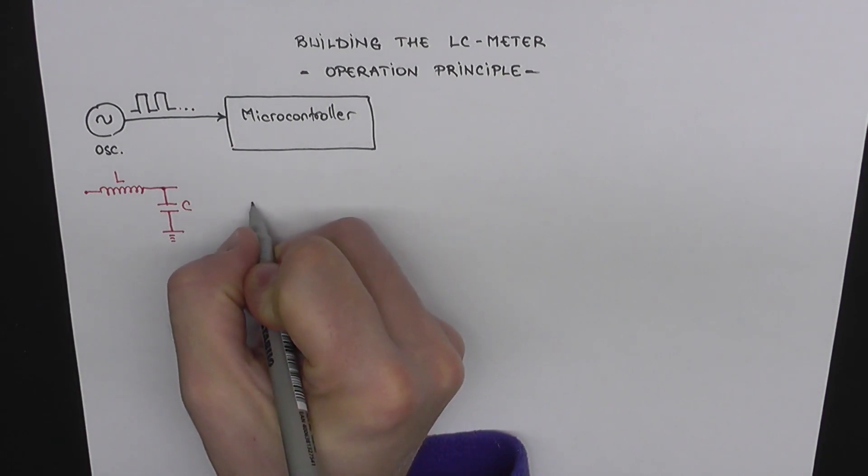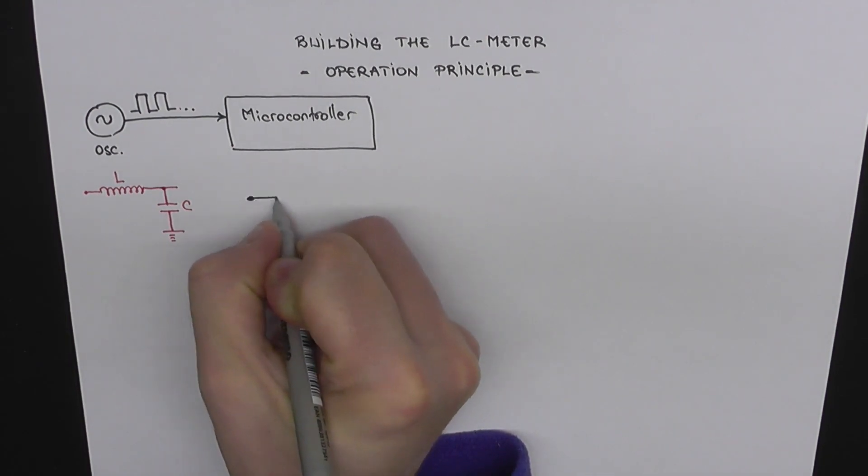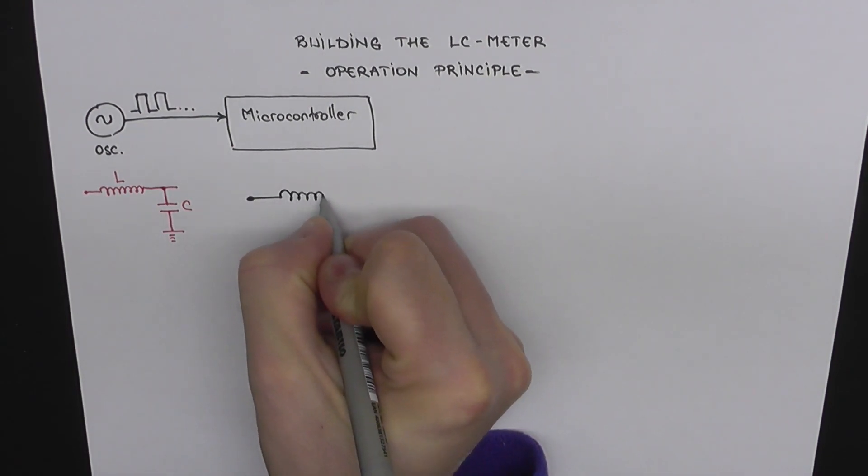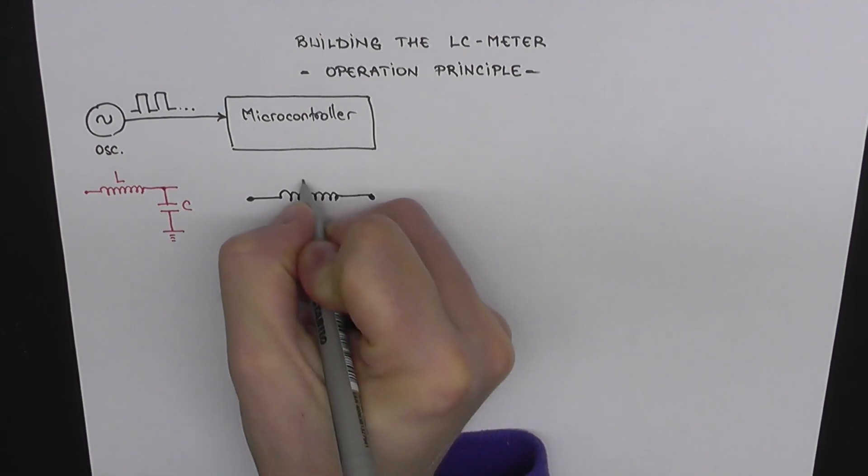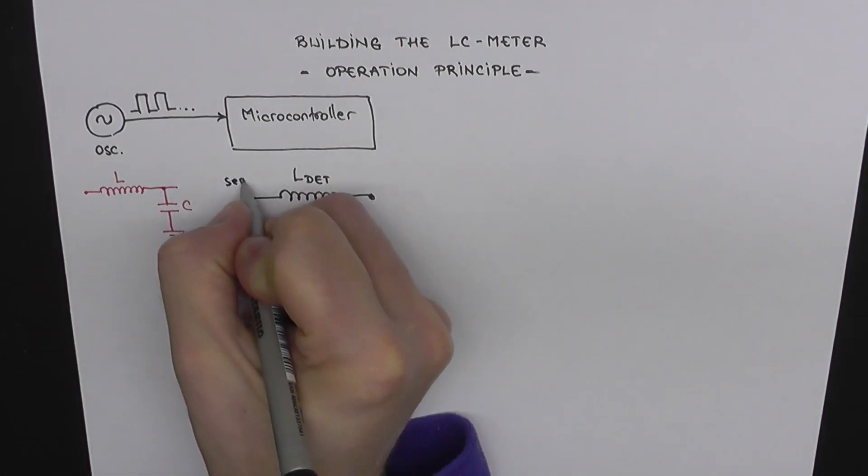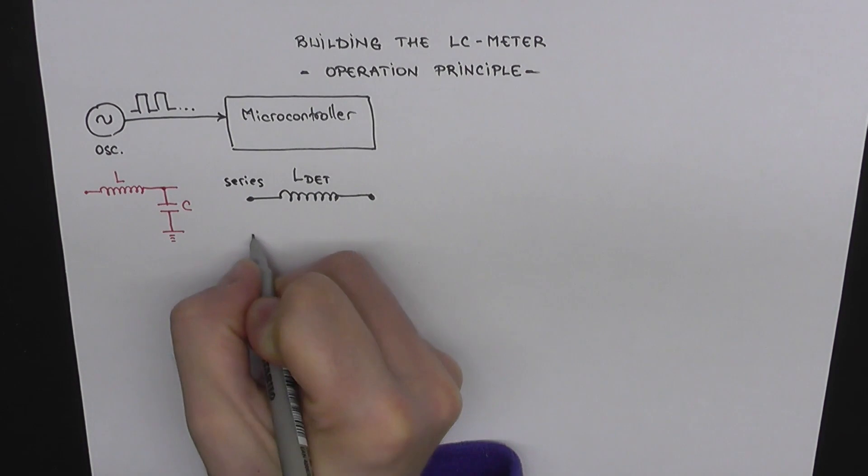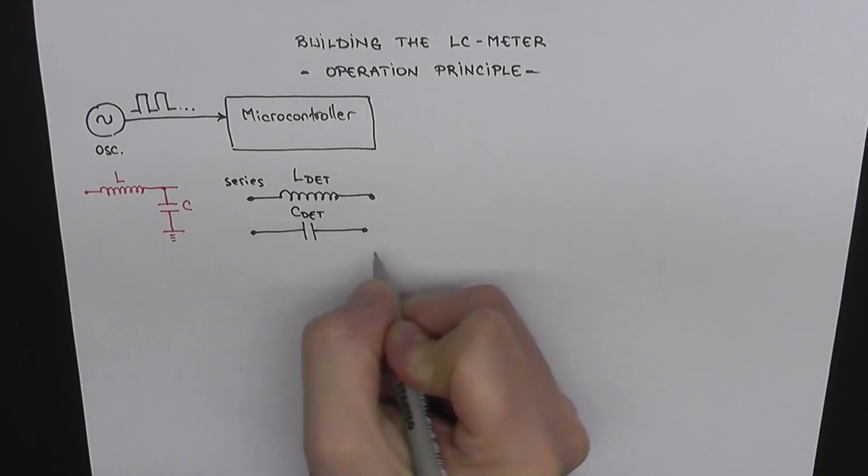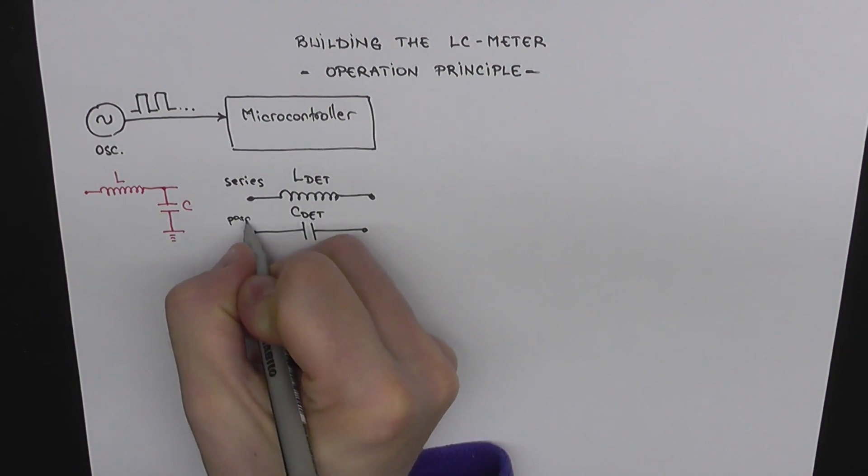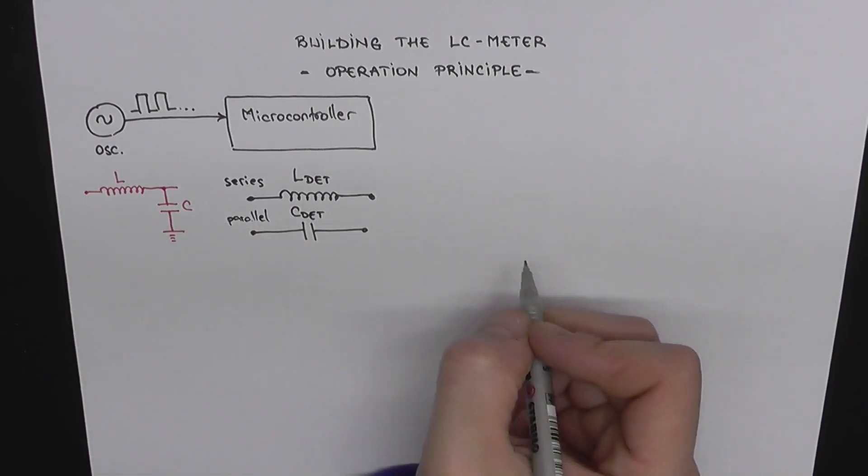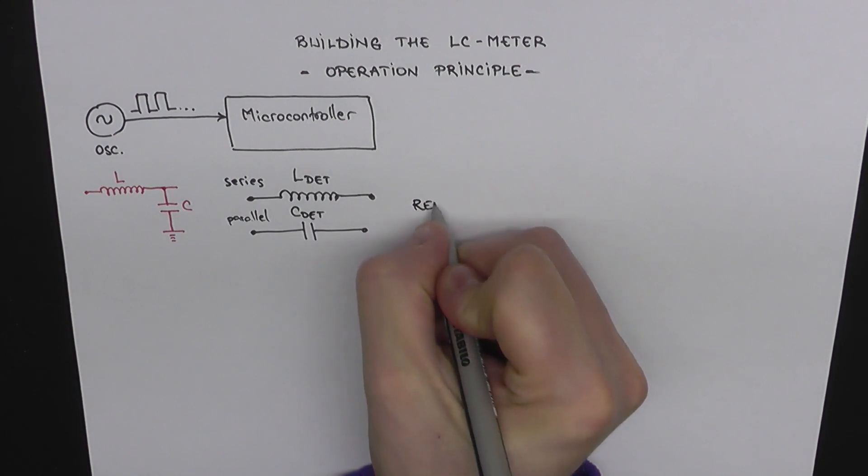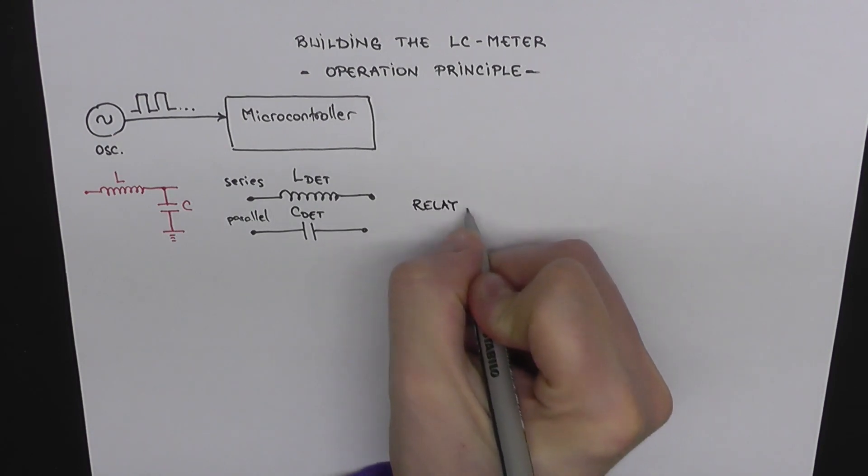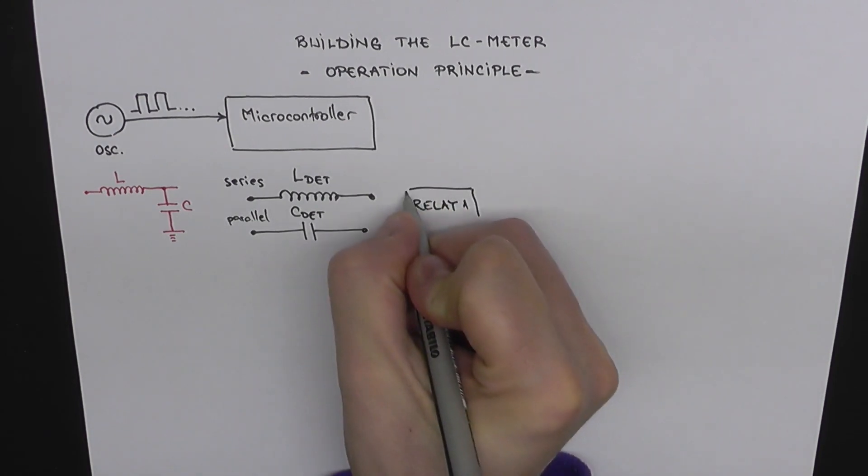And what we want to do next is let's add the components that we want to measure to this block schematic. We want to be able to add the inductor that we want to determine, LDET, in series to this existing inductor. And we also want to be able to add the capacitance that we want to measure, that we want to determine, in parallel to this capacitor. And to do that, we're using a double relay. Let's name it relay one. We're using the microcontroller to drive it. So this relay is acting like a double switch.